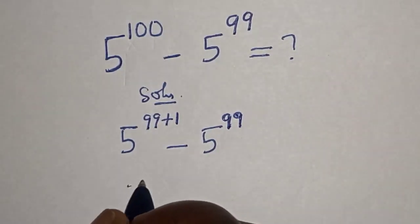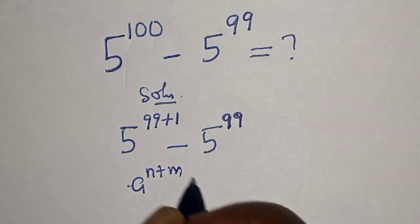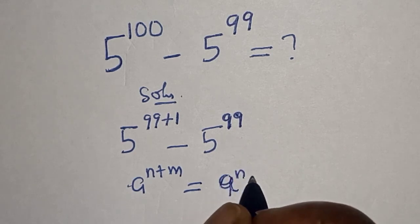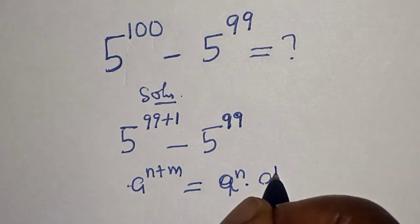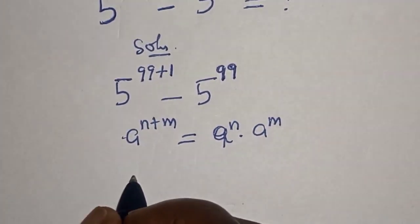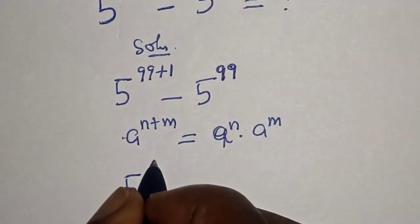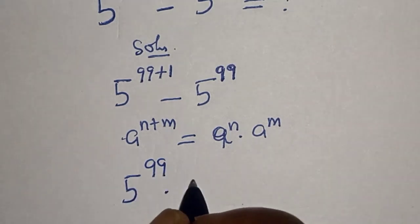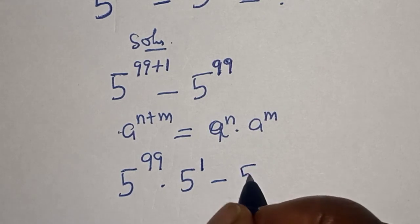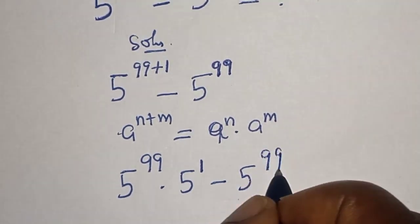If you have a raised to power n plus m, this is equal to a raised to power n multiplied by a raised to power m. And this is 5 raised to power 99 multiplied by 5 raised to power 1 minus 5 to the power of 99.